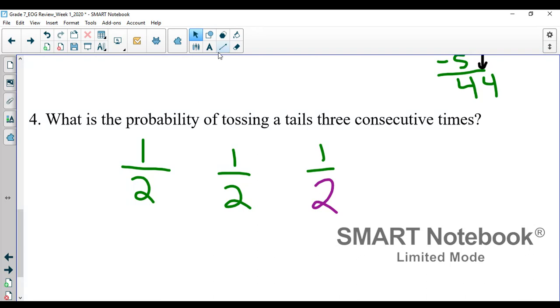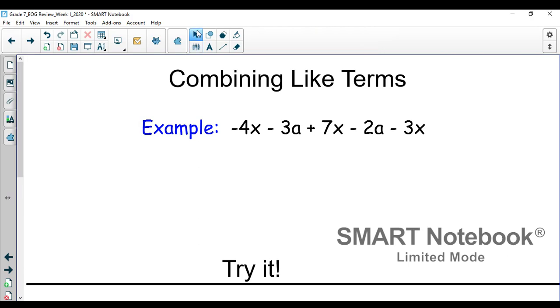When we're looking for compound events, or the probability of multiple events happening, you multiply each individual probability. So one-half times one-half times one-half is one-eighth. What that means is if you were to do this experiment, about one out of eight times you'd be able to flip three tails in a row. Okay, today's lesson will be focused on combining like terms.